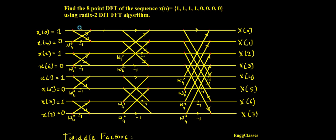Now I need to find the output at the first stage. The first output is the resultant of the first and second signal: 1 + 0×W4^0 = 1. Similarly, the next output: 1 + 0×W4^0 − 1 = 1. Moving further, each butterfly gives 1 as the answer, because the input signals are the same everywhere. So after the first stage iteration, all outputs are 1.